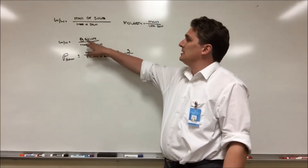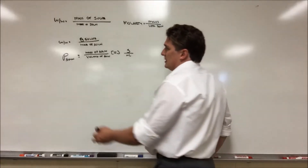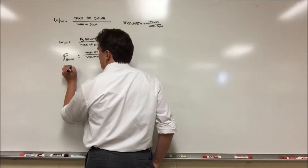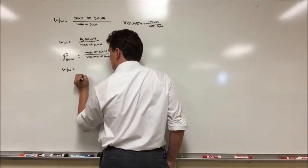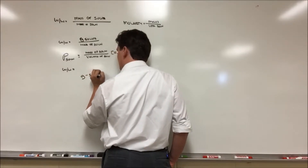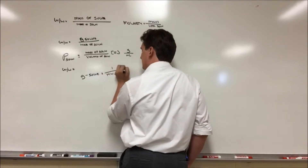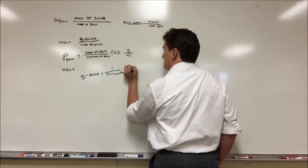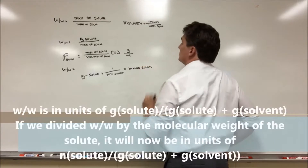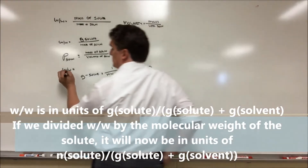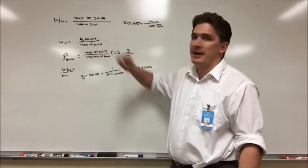We need a way to convert our grams to moles and convert our mass of solution to liters of solution. If we have grams of solute and divide by the molecular weight, this gives us moles of solute. So the first thing we're going to do is divide the weight fraction by the molecular weight. At this point we are in moles of solute per mass of solution.